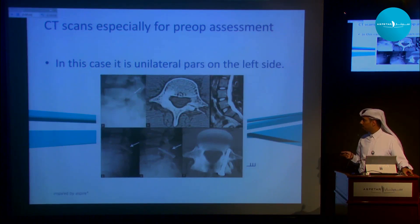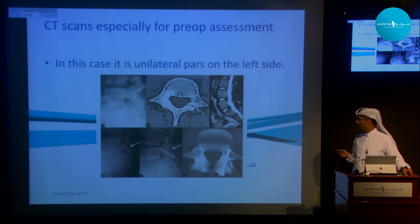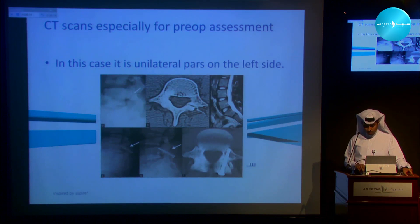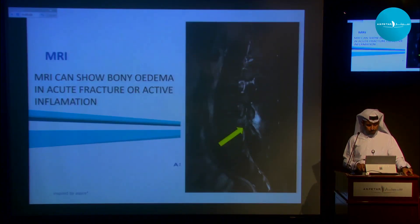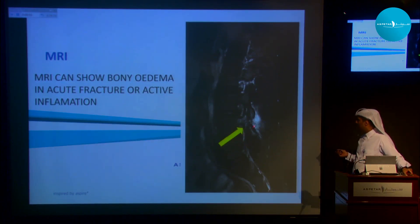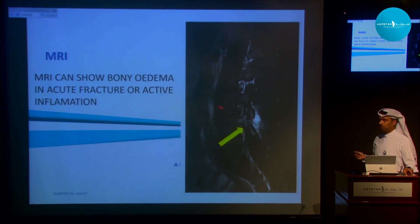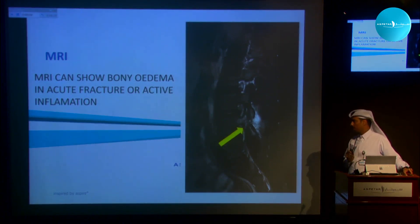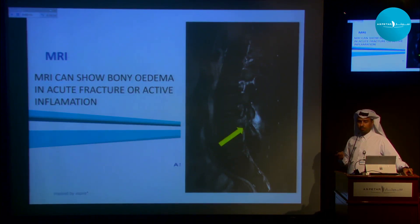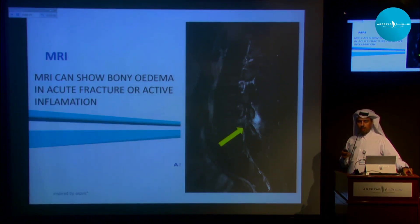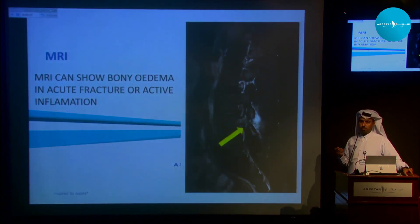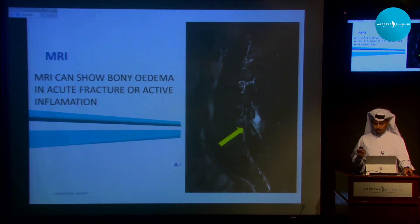CT scan is very good to define the bony anatomy. If there is a unilateral fracture, it can really show it and is also good for preoperative evaluation. On MRI scan you can see bony edema, which signifies if this is acute or chronic. However, I think repeating MRI six weeks later before allowing return to play is an overuse — you should go by clinical judgment more than the imaging.